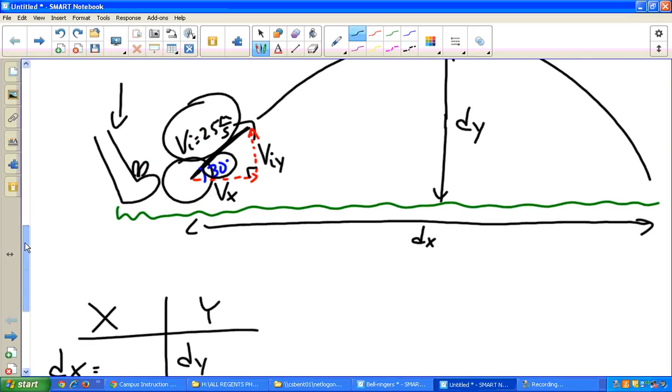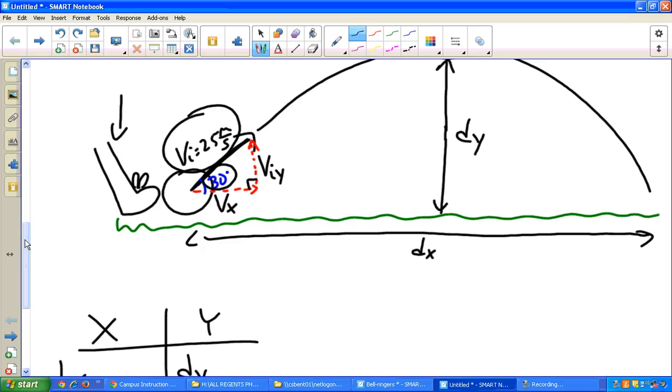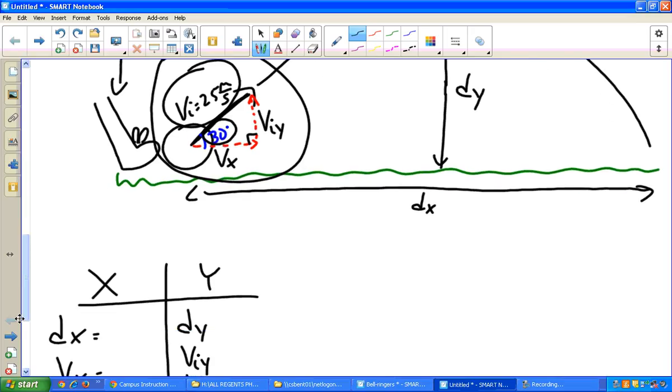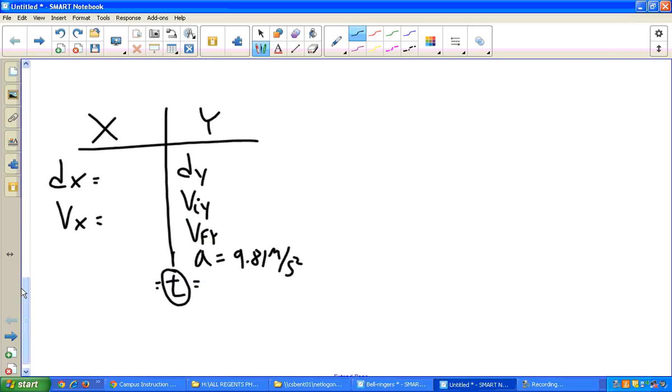The first thing I want to do with these projectile motion problems is, if you see we have this triangle here, we're going to go ahead and break that triangle up into its components. So I'll go ahead and redraw the triangle. Here's my 25 meters per second, angle of 30 degrees. Tip the tail end.